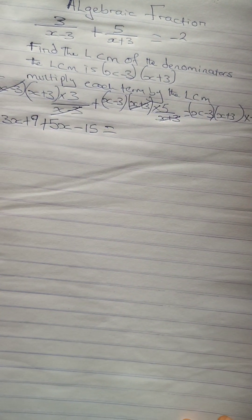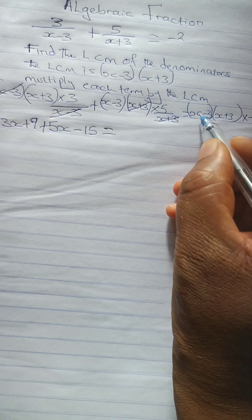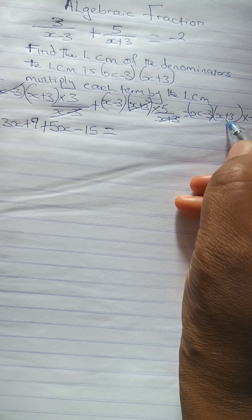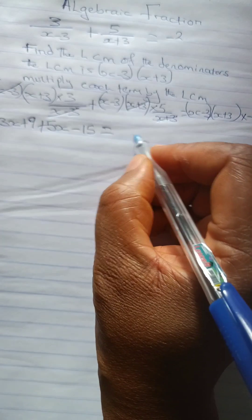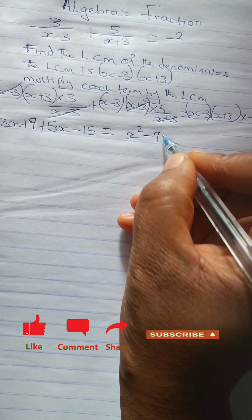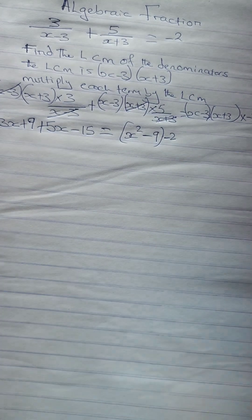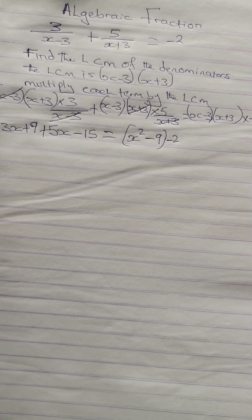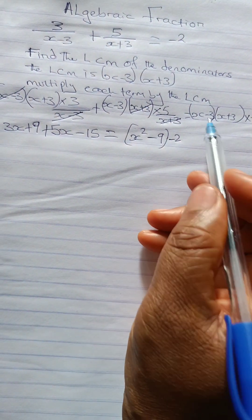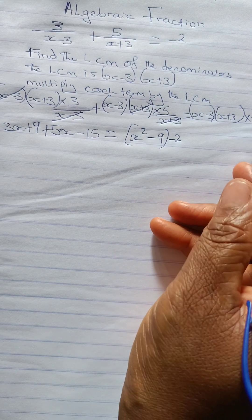So equal to, x minus 3 times x plus 3 is actually x squared minus 9. So times minus 2. I hope you understand. I hope you understand that this times this is x squared minus 9. Now times this,